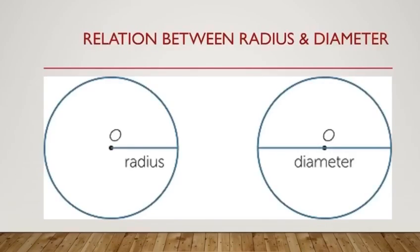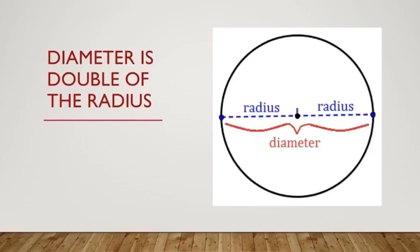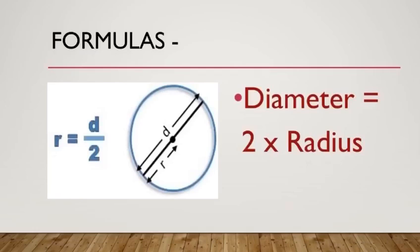So, now let us learn about the relation between radius and diameter. So, dear students, please see the figure very carefully. In the first circle presenting on the screen, it is presenting radius and the other one is diameter. So, here if we add two radius or if we join one end of the radius to the other one, we will get diameter. So, we can say that diameter is double of radius and radius is half of diameter.